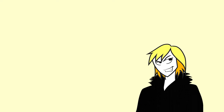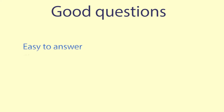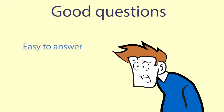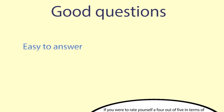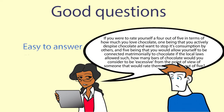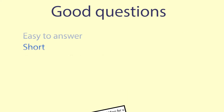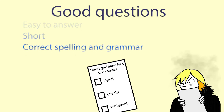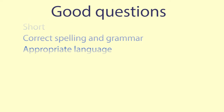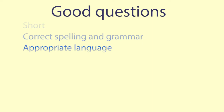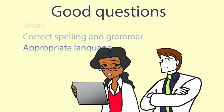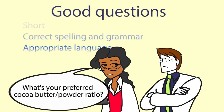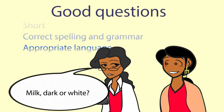You might think that it is easy to ask good questions in a questionnaire, but it isn't. You want to make it as easy as possible for the respondent to give you the information you want. To start with, the questions should be as short as possible. Questions need to have correct spelling and grammar. Questions should use language appropriate to the subject and the people you are asking. If you are asking experts you can use technical language, but generally you need to keep the language simple.